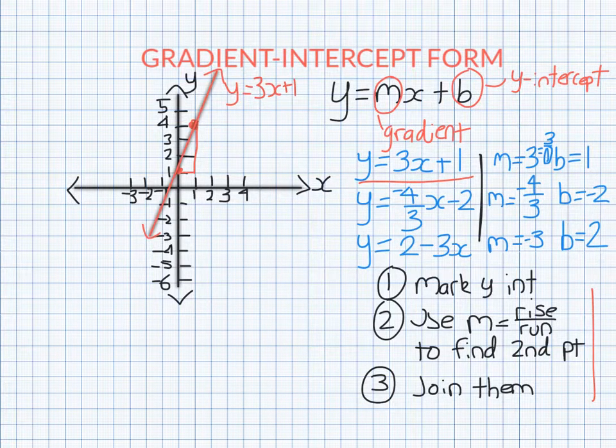So now let's look at the graph of y equals minus 4 over 3x minus 2. So we found that the y intercept is minus 2, so we plot that. So the gradient's negative 4 over 3. So I told you the bottom is how far you go to the right. So we're going to go to the right 3.